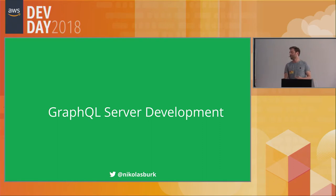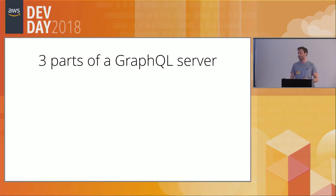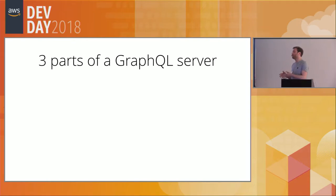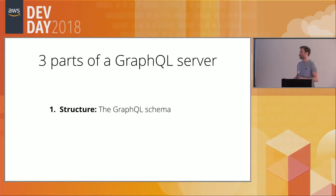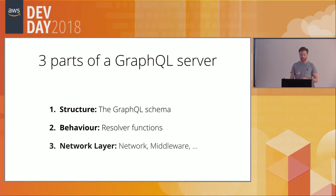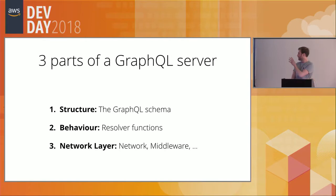Now let's talk about GraphQL server development - how can you build a GraphQL server? No matter which programming language you use, you'll always find three different parts inside a GraphQL server: the structure (the GraphQL schema defining the API operations), the behavior (implemented with resolver functions), and a network layer that processes the network request, creates the response, and sends it back to the client.